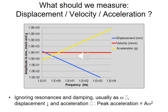If we ignore resonances and damping for a moment and just think about how velocity, displacement and acceleration change as a function of frequency, it's quite clear from the equations that for increasing frequency, velocity remains relatively constant, whereas displacement amplitude reduces significantly and acceleration increases significantly. Note that on this plot both the amplitude axis and the frequency axis are on a log scale. You can see the linear increasing line for acceleration and the reducing line for displacement, so velocity is the optimum parameter to measure in a vibration context.